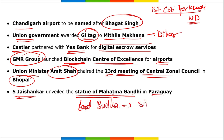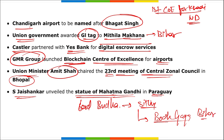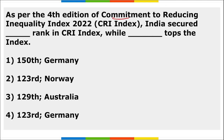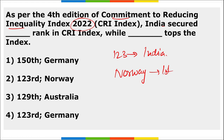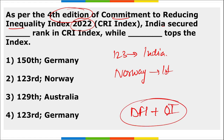External Affairs Minister S. Jaishankar unveiled a statue of Mahatma Gandhi in Paraguay. A statue of Lord Buddha in a sitting posture was unveiled in Bodh Gaya, Bihar. In the 44th edition of the Commitment to Reducing Inequality (CRI) Index 2022, India was ranked 123rd. Norway secured the first position. The CRI is a collaboration between Development Finance International and Oxfam International.